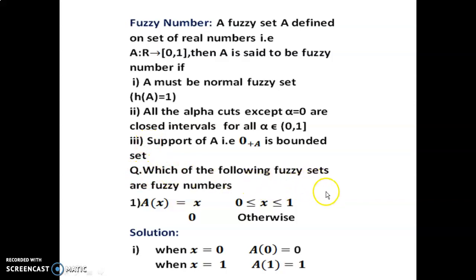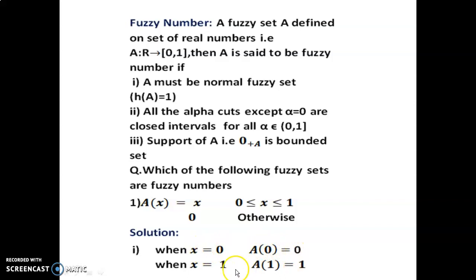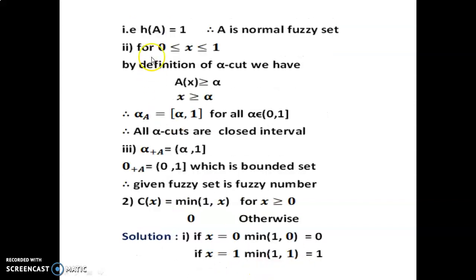Example: Which of the following sets are fuzzy numbers? A(x) = x for the interval [0,1] and 0 otherwise. Solution: Since the interval includes 0 and 1, we substitute both. When x = 0, A(0) = 0; when x = 1, A(1) = 1. Therefore the height of A equals 1, so A is a normal fuzzy set — Condition 1 satisfied.